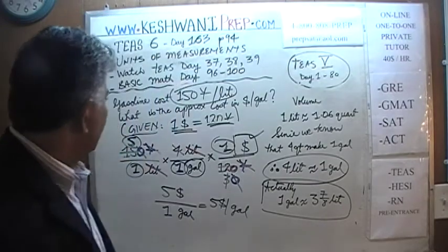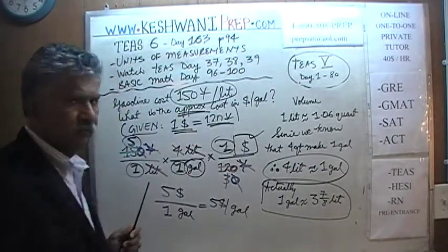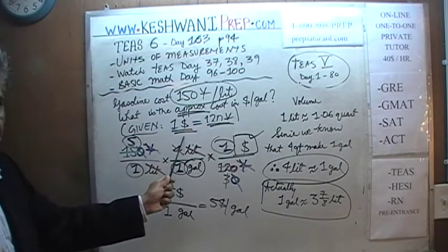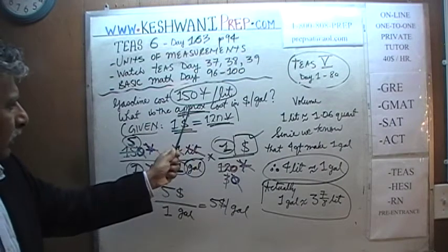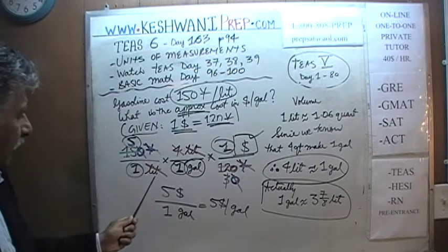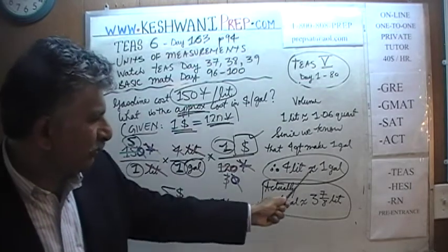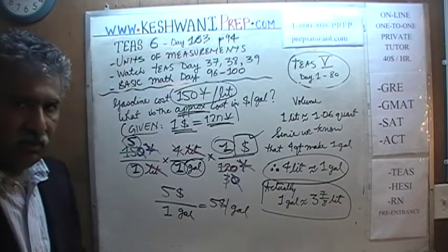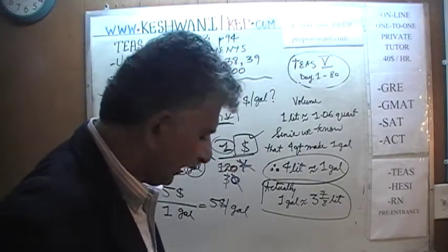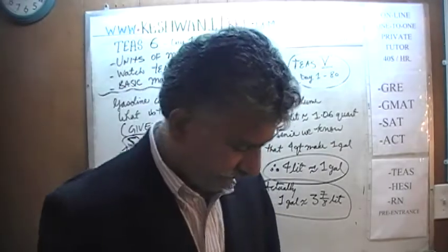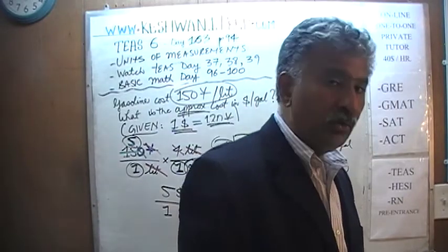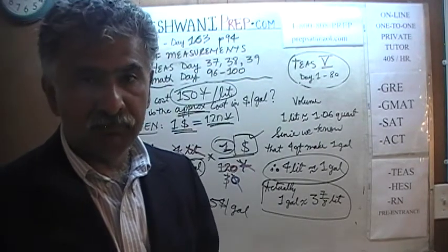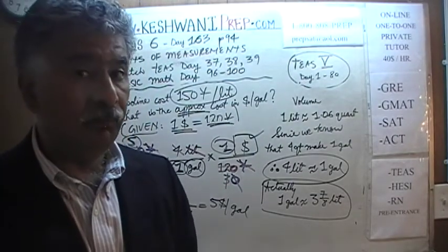Why does the question say approximate cost? Even though we used the precise exchange rate — 1 dollar is exactly 120 yen — the approximation comes from the fact that we're pretending 1 gallon is made up of exactly 4 liters. It's not — 1 gallon is approximately 3 and 7/8 liters, hence the approximation. The cost is approximately 5 dollars per gallon — almost twice as much as in the U.S., where as I speak today, July 13th, 2017, gas costs around $2.50 a gallon. I'll see you tomorrow. Bye now.